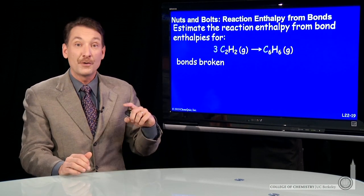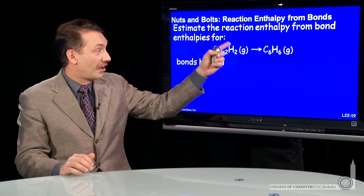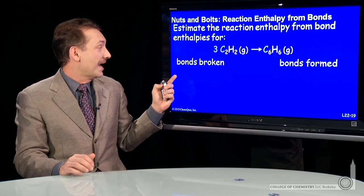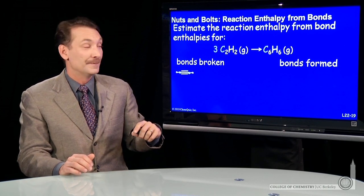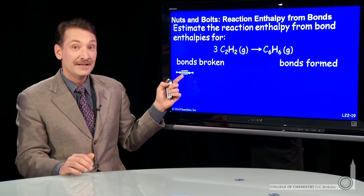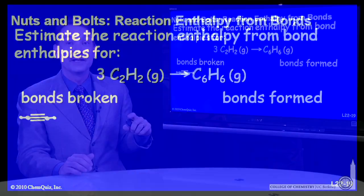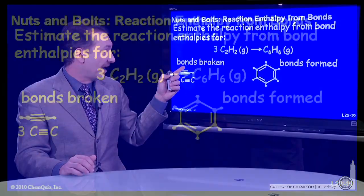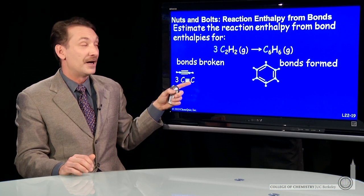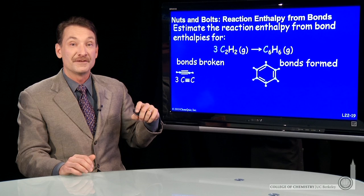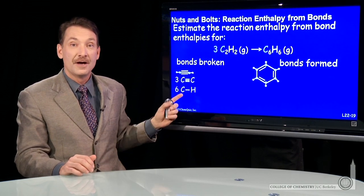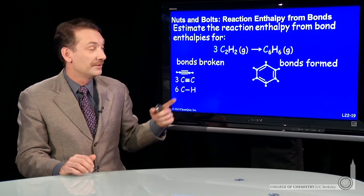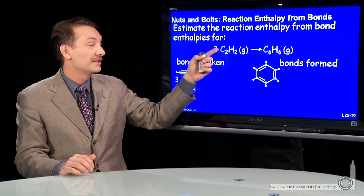The bonds that are broken in the chemical reaction would be all the bonds in the acetylene, and all the bonds formed would be all the bonds in benzene. Acetylene is C₂H₂ with a triple-bonded carbon, and benzene is a ring structure with alternating double and single bonds. I have to break three moles of carbon-carbon triple bonds and six moles of carbon-hydrogen bonds, since there are two C-H bonds in each acetylene.